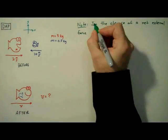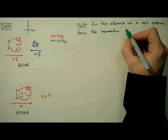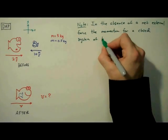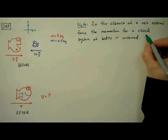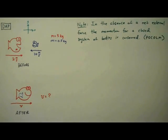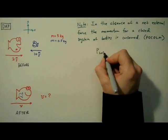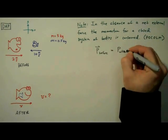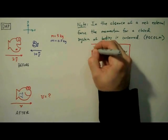POLCOM states that in the absence of a net external force the momentum for a closed system of bodies remains constant or is conserved. And we can state POLCOM mathematically by saying this system's total momentum before the collision is equal to its total momentum after the collision.